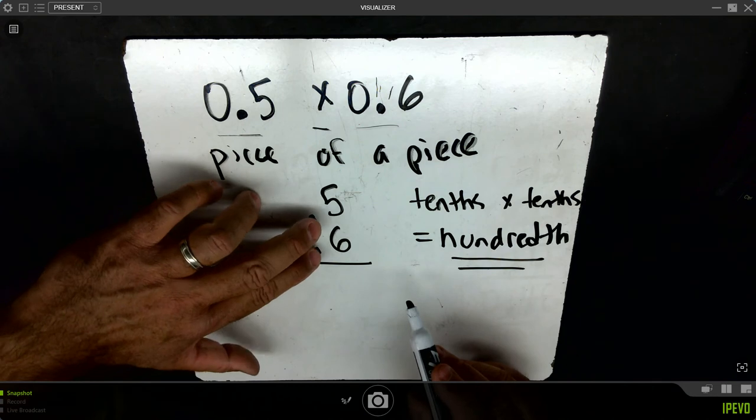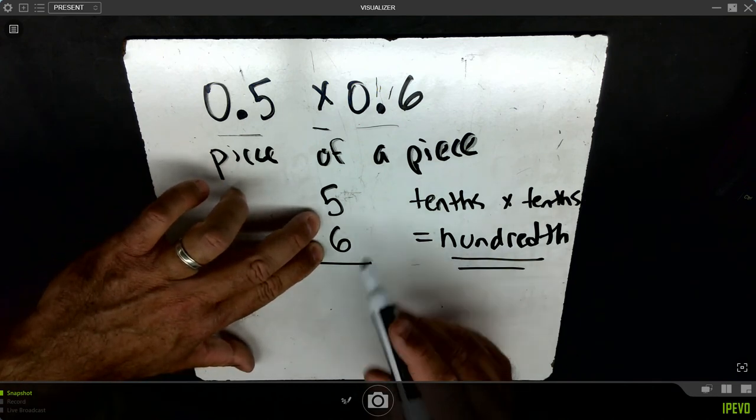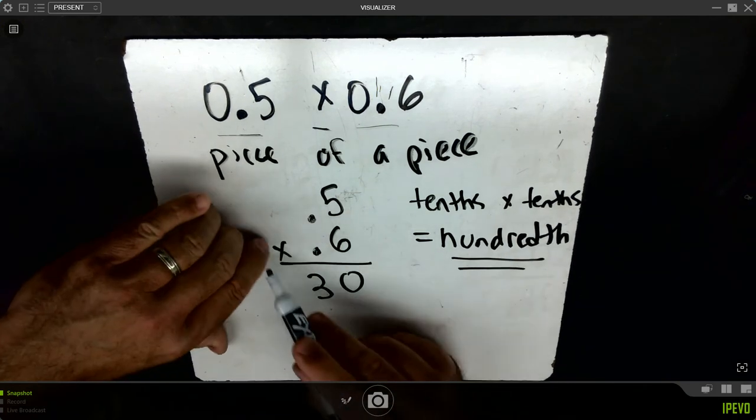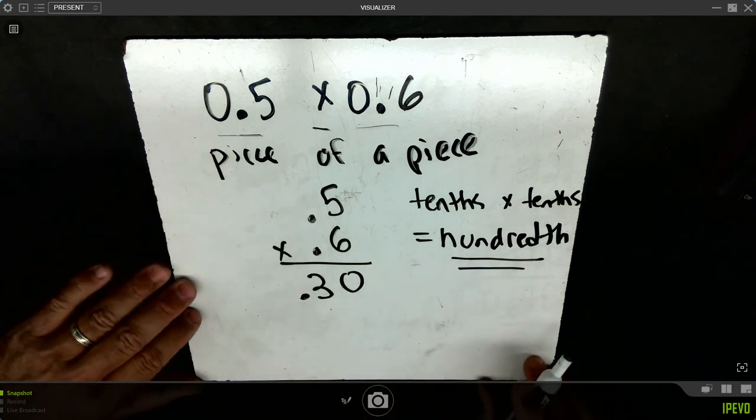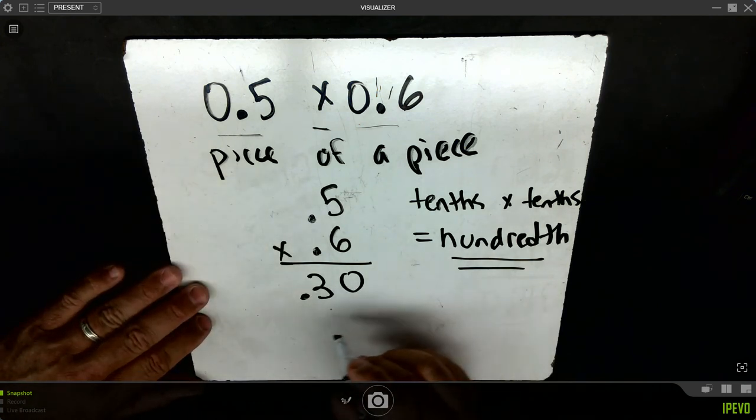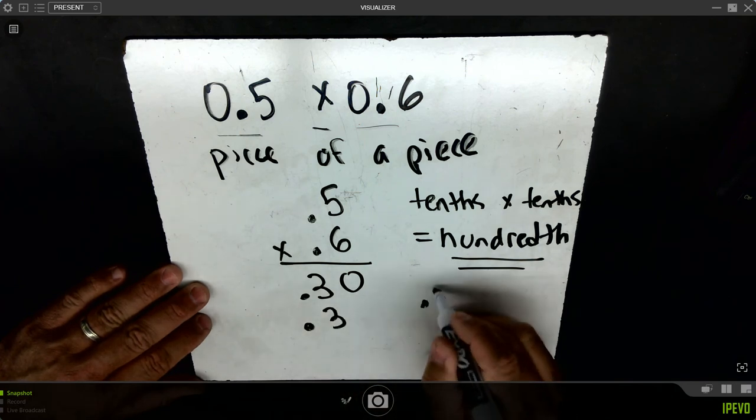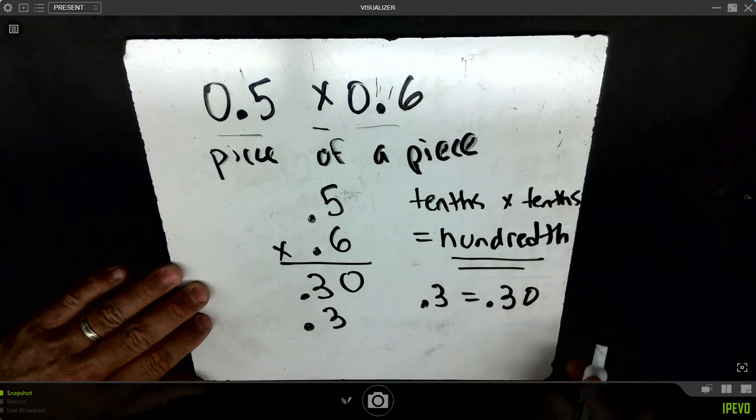I'm going to cover these both decimals up and treat it like a whole number. I know that six times five or five times six would be thirty. But because it's five tenths times six tenths, my answer needs to be thirty hundredths. I could write it as thirty hundredths, or I could even write it as three tenths, because those are equivalent. Three tenths is equivalent to thirty hundredths.